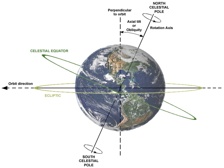In astronomy, axial tilt, also known as obliquity, is the angle between an object's rotational axis and its orbital axis, or equivalently, the angle between its equatorial plane and orbital plane.